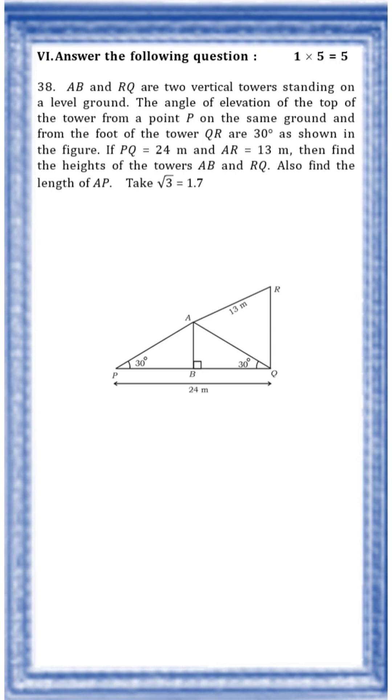Here what has been given? AB and RQ are two vertical towers. Now here PQ is 24 meter.